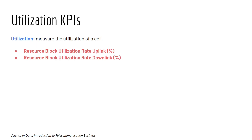The Utilization KPI measures the utilization of a cell. We have two KPIs: Resource Block Utilization Rate for the uplink and Resource Block Utilization Rate for the downlink. It's important to keep track of cell utilization, as a cell that is overutilized usually provides a very poor experience to the end user.